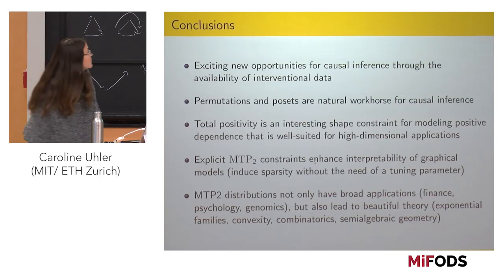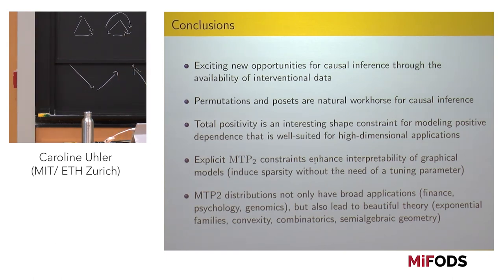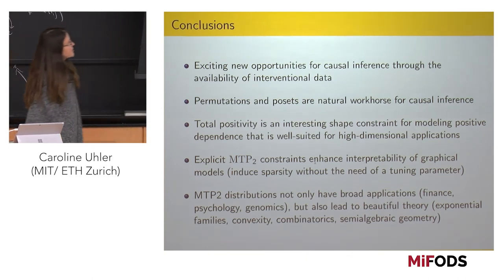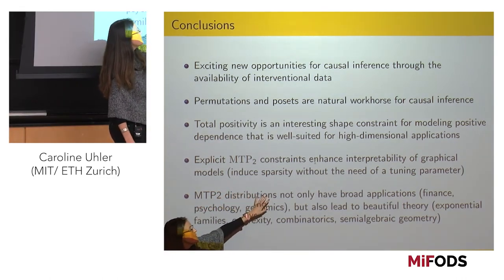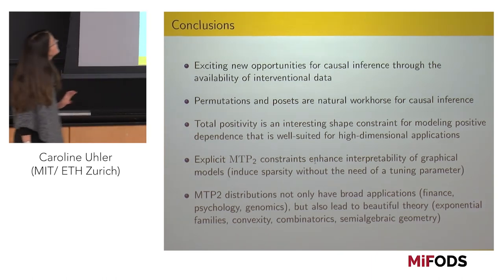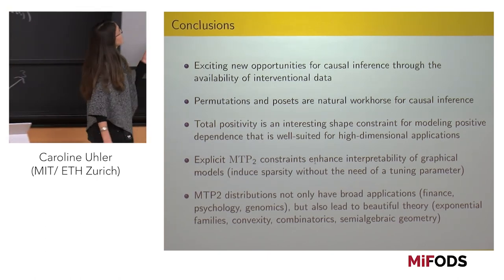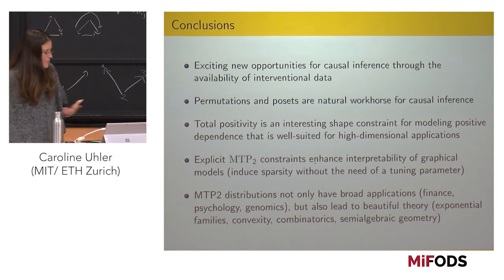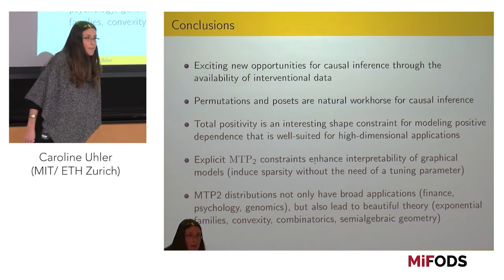We have applied this to all kinds of genomics applications. In terms of graphical models, MTP2 is a very interesting shape constraint — it gives very nice properties in terms of inducing sparsity without the need of a tuning parameter, and gives consistency even in the high-dimensional setting. In terms of causality, there are very interesting opportunities coming through the availability of interventional data, leading to new mathematical questions. Permutations and posets are really very natural workhorses for solving these problems and have led to many new algorithms that are very natural when you think about them from the permutations perspective.